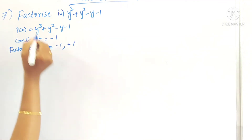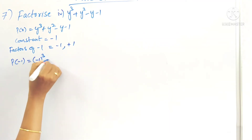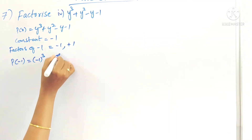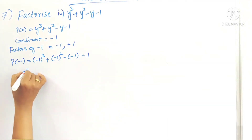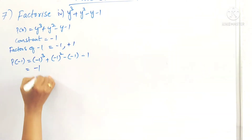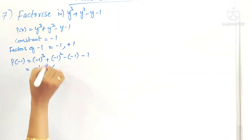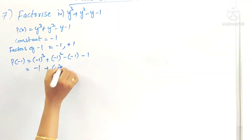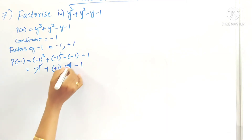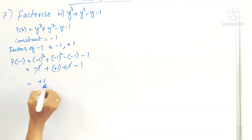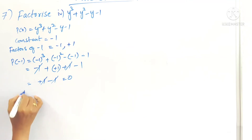We have to check whether -1 is a factor of the given polynomial or not. So compute p(-1): (-1)³ + (-1)² - (-1) - 1. A negative number raised to an odd power is -1, and to an even power is +1. So we get: -1 + 1 + 1 - 1 = 0.